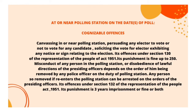At or near a polling station on the date of poll — cognizable offense: canvassing in or near a polling station, pursuing any elector to vote or not to vote for any candidate, soliciting votes, or exhibiting any notice or sign relating to the election is an offense under Section 130 of the Representation of the People Act 1951, with a punishment of a fine up to Rs. 250. Misconduct or disobedience of lawful directions of the presiding officer, and re-entering the polling station after being removed, is an offense under Section 132, with a punishment of three years' imprisonment, a fine, or both.